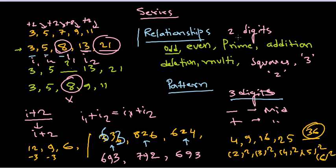For two-digit numbers, look for squares or cubes. For three-digit numbers, look for addition or subtraction of the terminal digits to get the middle digit. These are the different rules you can follow, though there are no fixed rules for solving these problems. We'll be solving problems and applying all of these rules. I hope that's helpful — thank you!